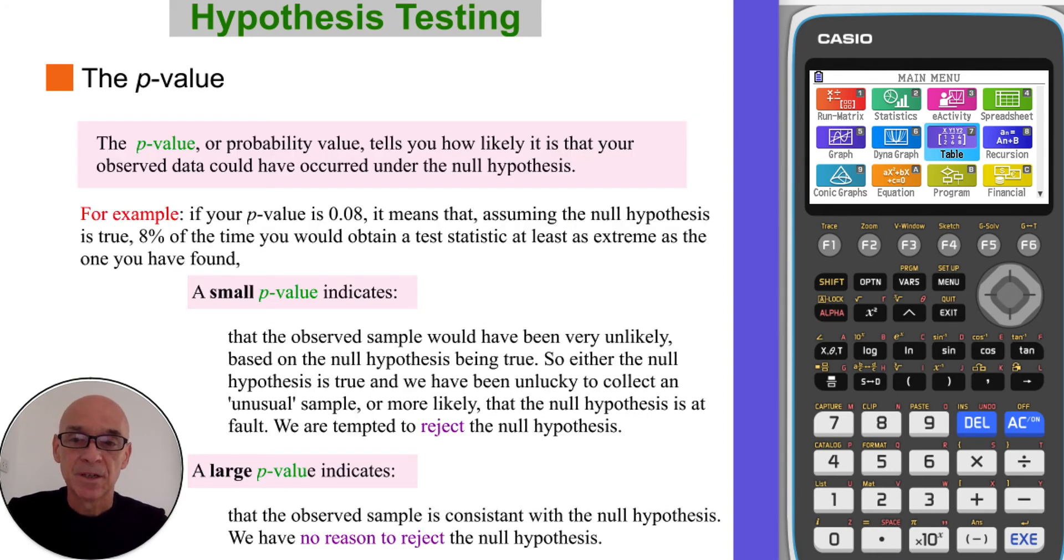So onto the p-value, or the probability value. This tells you how likely it is that your observed data set could have occurred under the null hypothesis. For example, if you have a p-value of 0.08, it means that assuming the null hypothesis to be true, 8% of the time you would obtain a test statistic at least as extreme as the one that you found, the one that you've got.